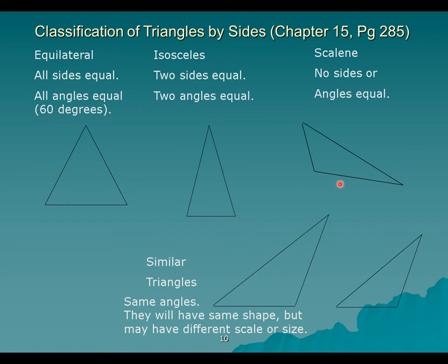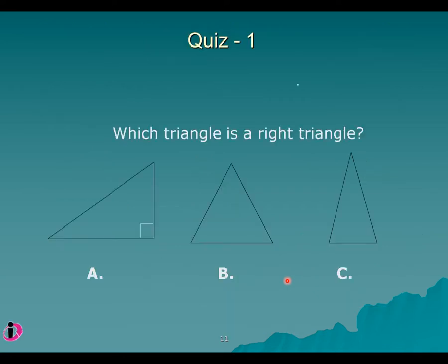A lot of triangles in real life may be scalene — no sides equal, no angles equal. Remember, triangles may have the same angles but different side lengths. No matter how you draw it, the total is always 180. It's possible to have two different-sized triangles that still have the same angles.